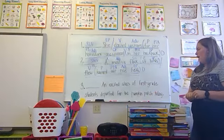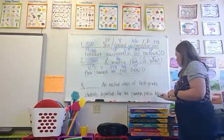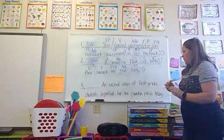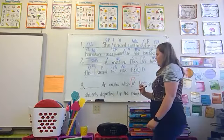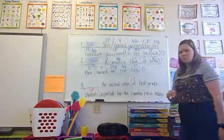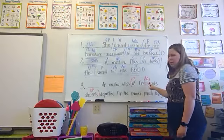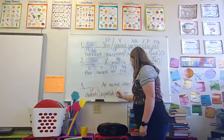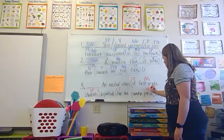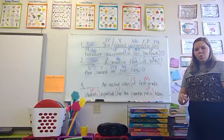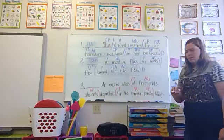Number three: an excited class of first grade students departed for the pumpkin patch today. The first preposition is 'of' — of what? Students — object of the preposition. What kind of students? First-grade — adjective. Since it is hyphenated, it acts as one word. 'For' is another preposition — for what? Patch — object of the preposition. What kind of patch? Pumpkin — adjective. The — article adjective.